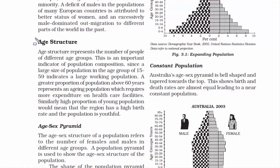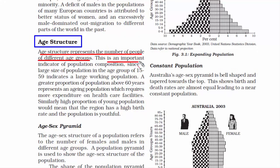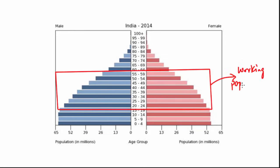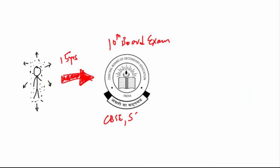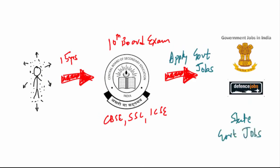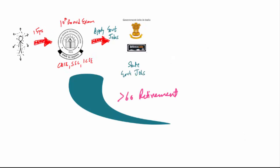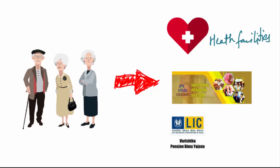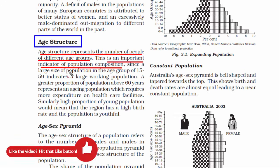Now let's read about how age structure can help us in understanding the population. Age structure tells us how many people belong to what age group. In India, the working population is in the age group of 15 to 59 years. By 15, basic schooling is done and many join the workforce, and by 60 you retire. People above 60 are the aging population, which requires more expenditure on healthcare facilities and pensions. By knowing the age structure, the government can allocate resources efficiently for both younger and older populations.